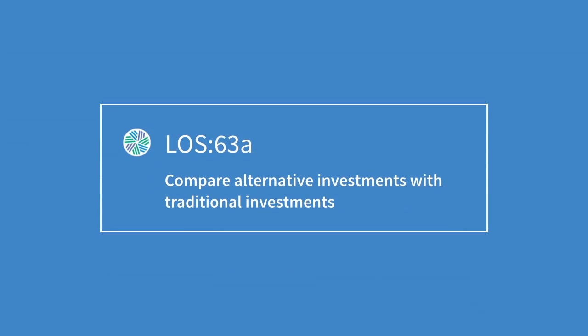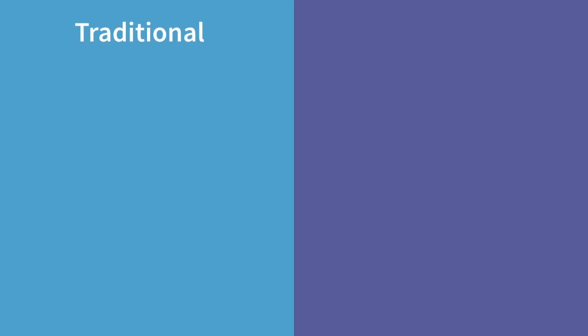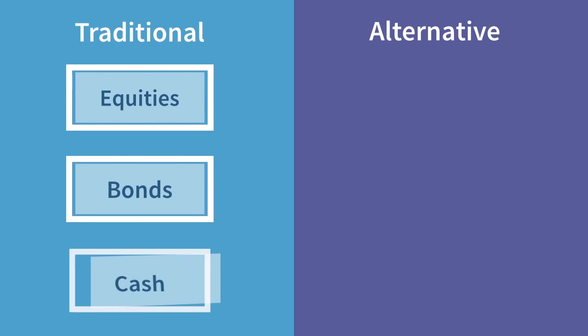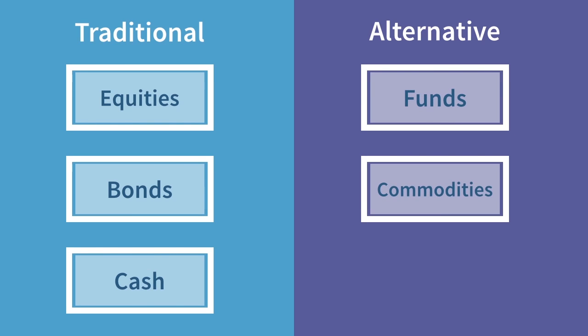The first thing we are going to look at is how these investments compare to traditional asset classes. Remember from reading 45 the different asset classes which are referred to as traditional and those which we refer to as alternative. Under traditional we have equities, bonds and cash. Under alternative we have funds, commodities and real estate.